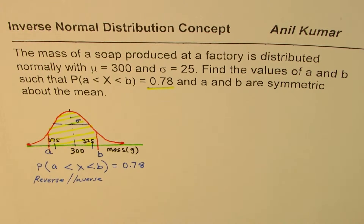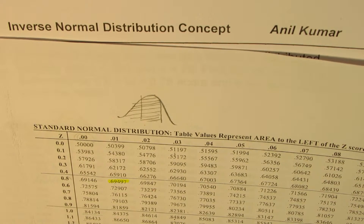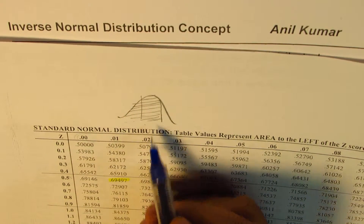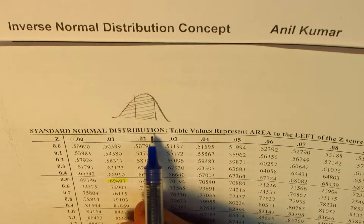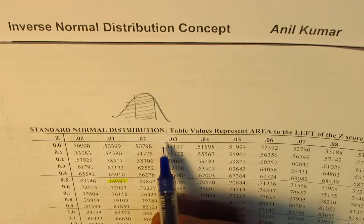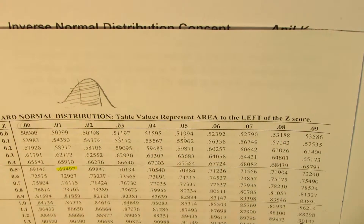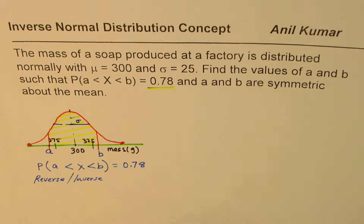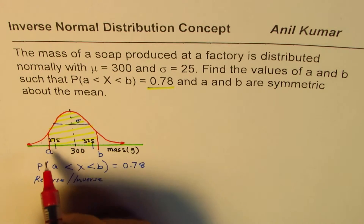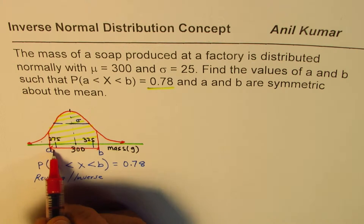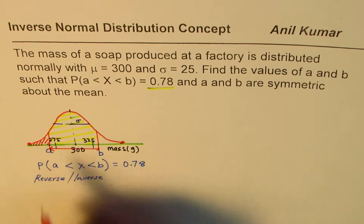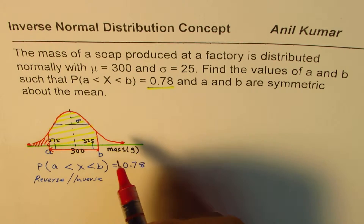We will use the standard normal distribution tables. The table values represent area to the left of the z-score — not from the center. So we need to do some manipulation before using the value 0.78. We know the central area is 78%, and we need to find the left-tail area to use the table.